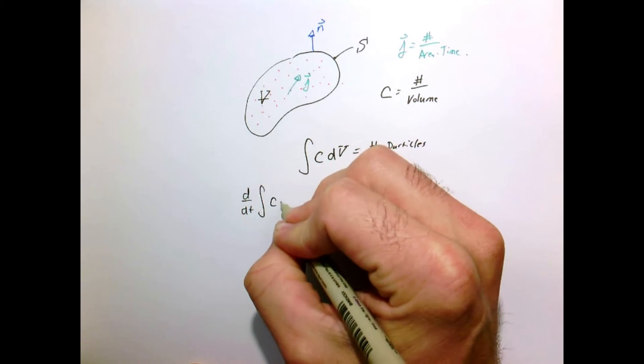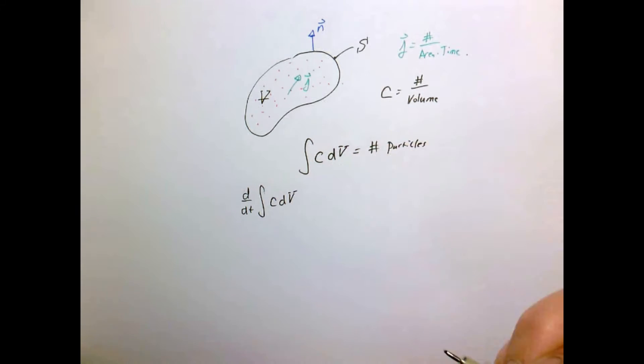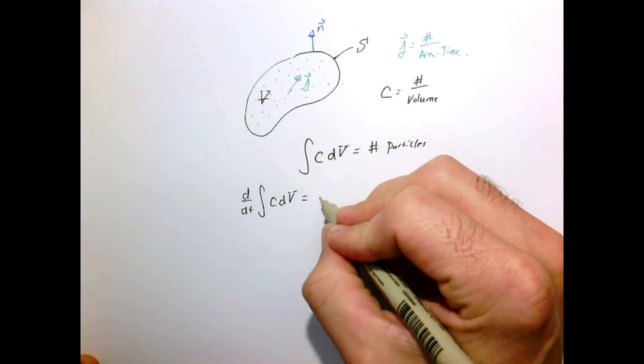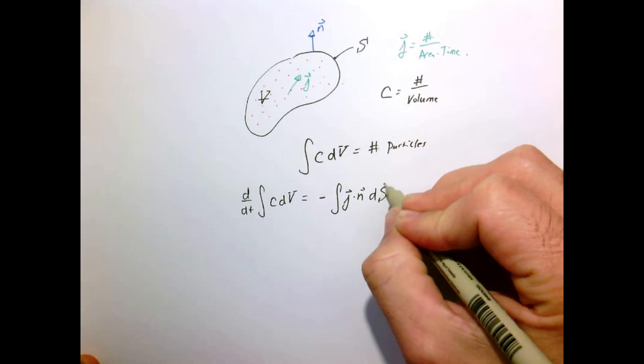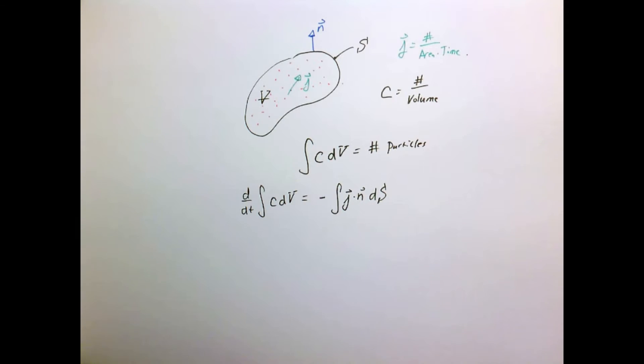The time rate of change of the number of particles inside our volume can only change if there's flux at the surface. This is perfectly analogous and exactly like we had in the heat flow problem.